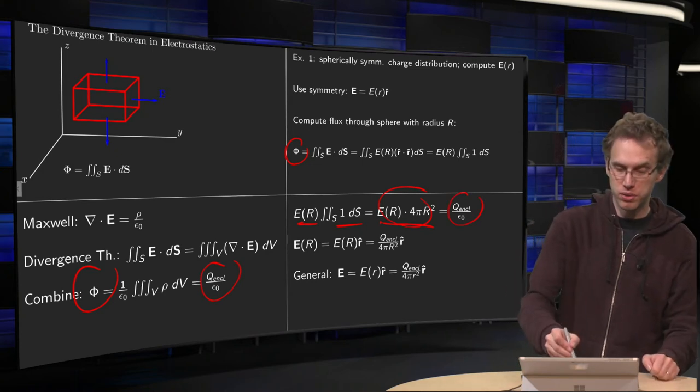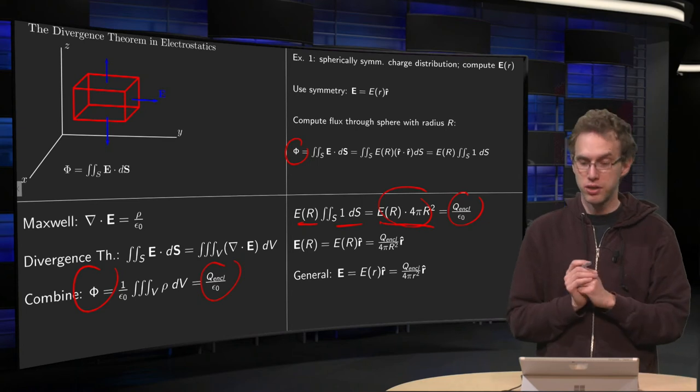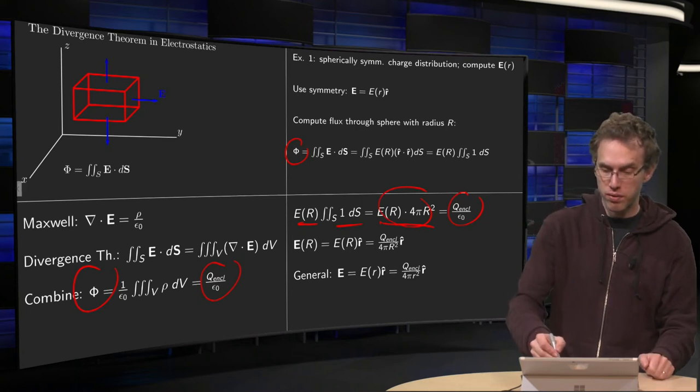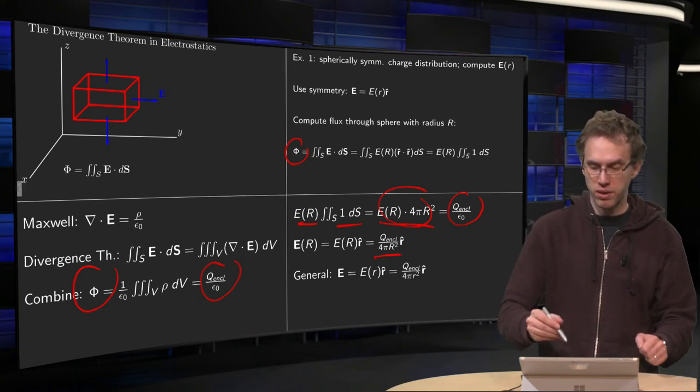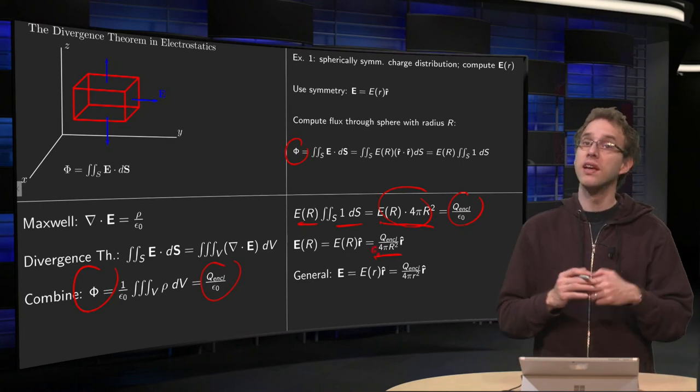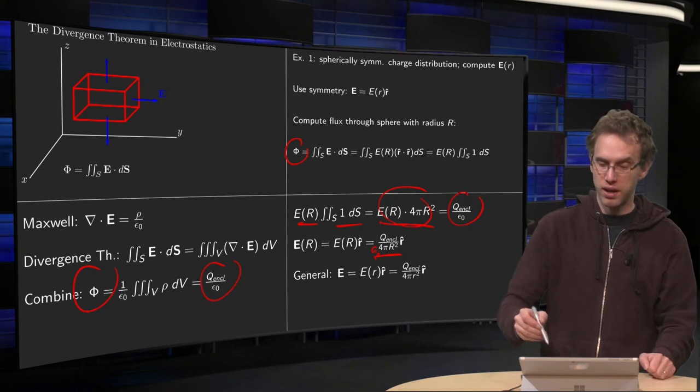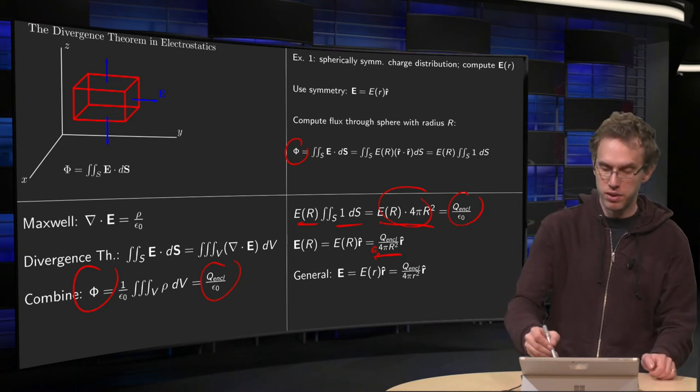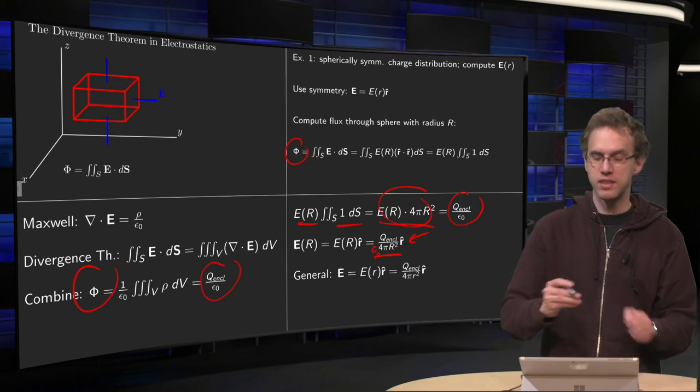So this term here equals q enclosed over epsilon zero. So now you can compute the magnitude of your electric field. That's q enclosed over 4 pi epsilon zero R squared. And then you know your total electric field, that's just the same, but then in the R-hat direction.